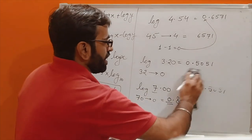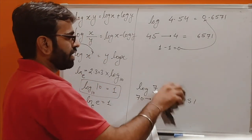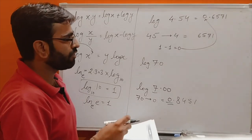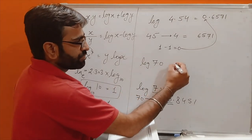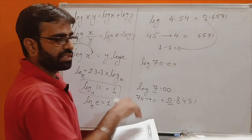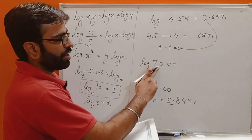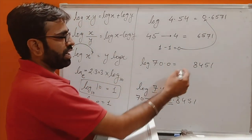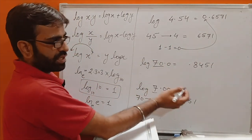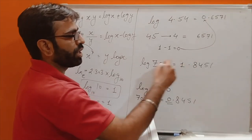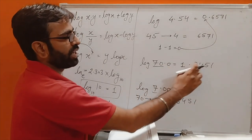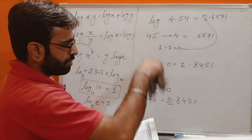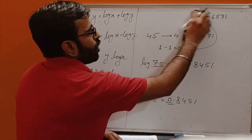If the value is log 70, we again consider the 3rd digit as 0 and look at 70 in column 0 — that gives 8451 again. But now we have 2 digits in the characteristic, so 2 − 1 = 1, and the value is 1.8451. In this way we can find log values.